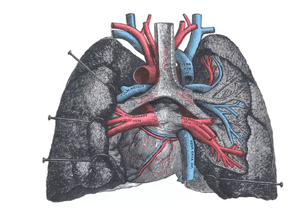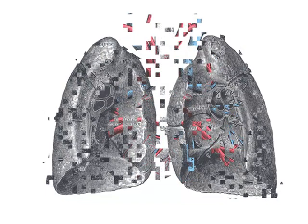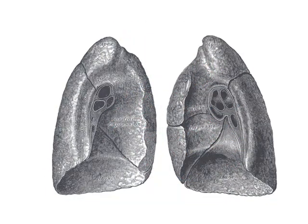The hilum of each lung is the region where the primary bronchioles enter. The pulmonary arteries enter and the pulmonary veins exit. This image of the back of the heart nicely shows these elements in position in the body. Looking more closely at the hilum, we can see the holes where the bronchioles and pulmonary arteries enter and the pulmonary veins exit.